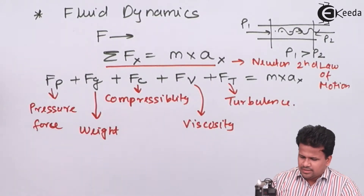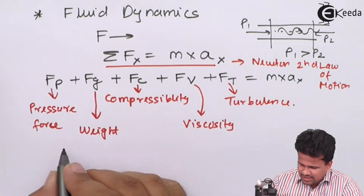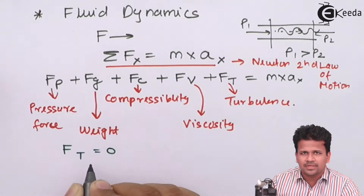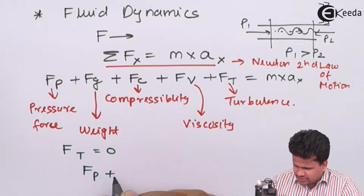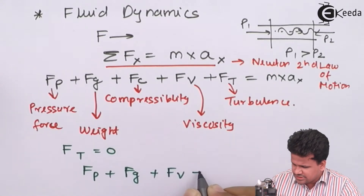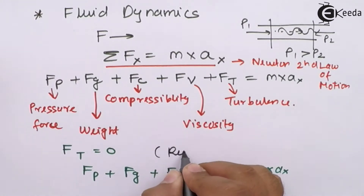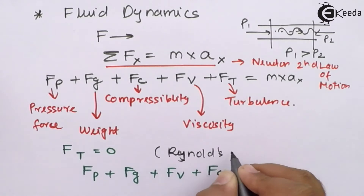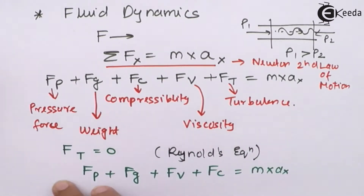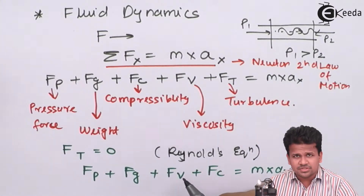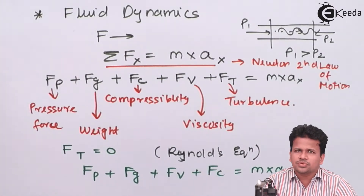Now, if the force due to turbulence is zero, then we get: force due to pressure plus force due to gravity plus force due to viscosity plus force due to compressibility equals mass into acceleration in a particular direction. If we don't consider the force due to turbulence, this equation becomes Reynolds equation. This means we consider the fluid motion as laminar flow, in which there is some viscous force but the force due to turbulence is zero.